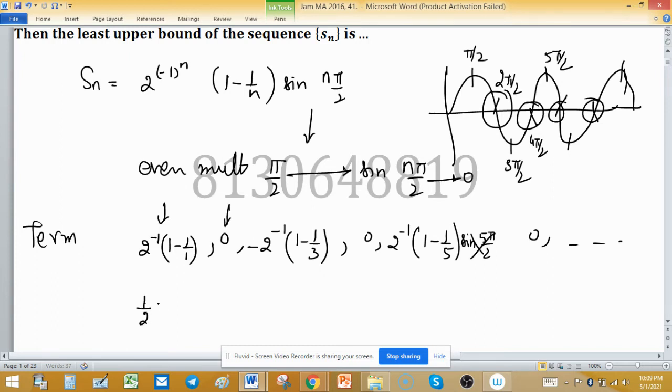So this is 1/2 times (1-1), so the first term is 0. Second term is 0. Third term is -1/2 times (1-1/3). Then 0 again. Then 1/2 times (1-1/5). Then 0, and so on.